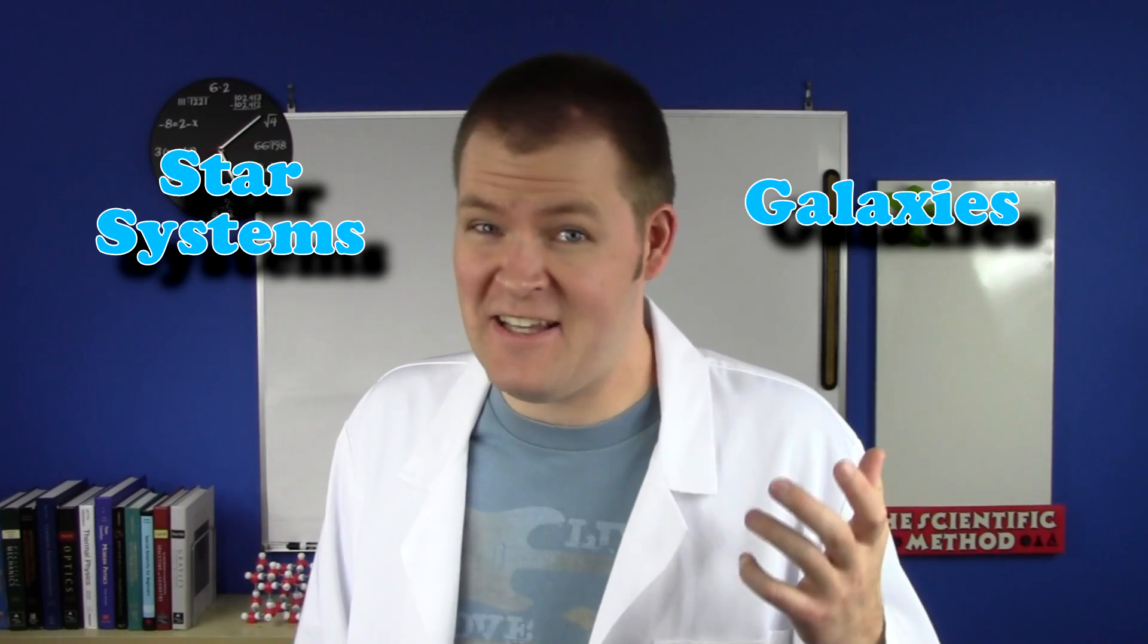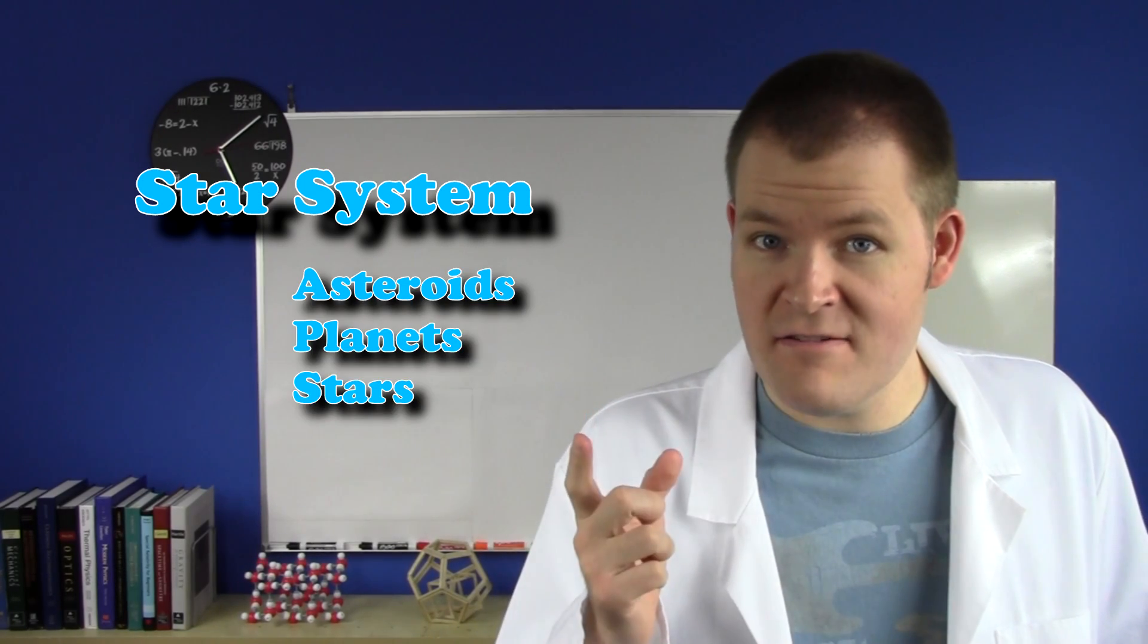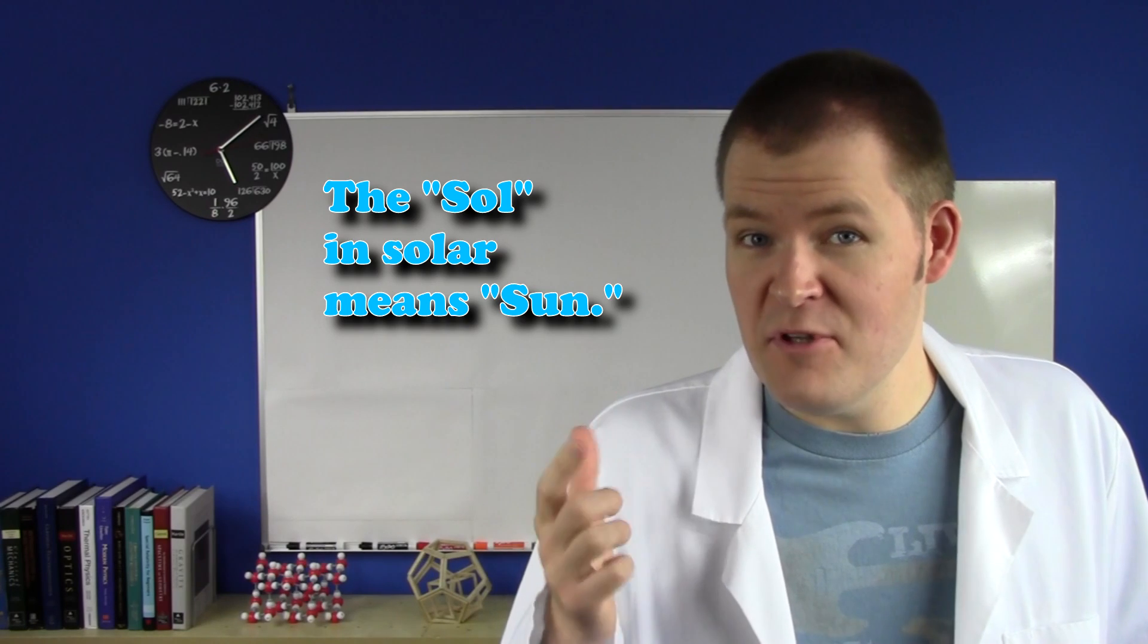Okay, so the biggest mix-up I see people have is between star systems and galaxies. A star system is a small collection of asteroids, planets, and stars. Our solar system is an example of this.